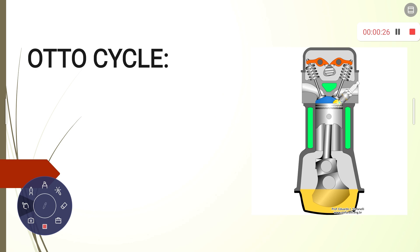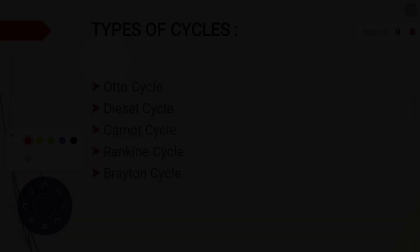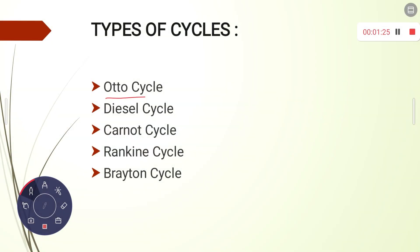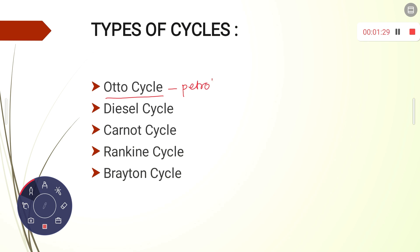First we will see some introduction about types of thermodynamic cycles. Basically there are five types of cycles. First we will discuss about the Otto cycle. The Otto cycle is used for petrol engines — for example, your bikes. In bikes, a petrol engine is present, so the Otto cycle is used there.